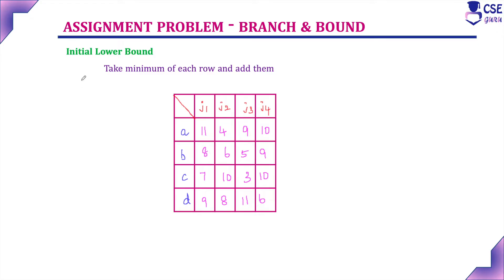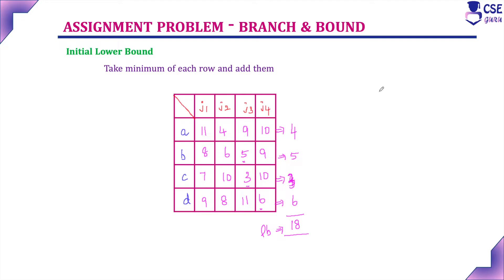The first step is to find the initial lower bound value. For each row, we take the minimum cost and add all these values to get the lower bound. In the first row, the minimum cost is 4; second row is 5; third row is 3; and fourth row is 6. So the initial lower bound value is 18.